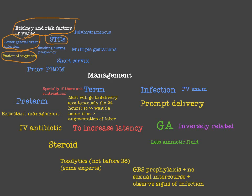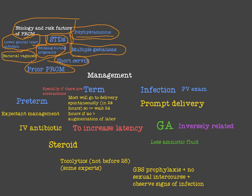Sexually transmitted diseases and smoking during pregnancy are important risk factors for premature rupture of membrane. We can also add polyhydramnios, multiple gestation, and short cervix. So we can categorize these into: infection (lower genital tract infection, chorioamnionitis, STDs), lifestyle factors like smoking, and anatomical factors like polyhydramnios, multiple gestation, and short cervix.